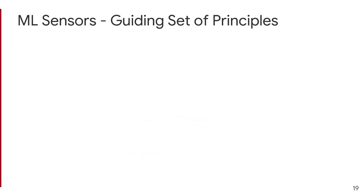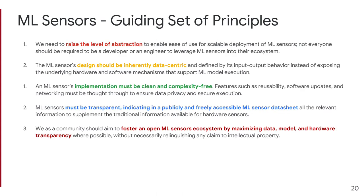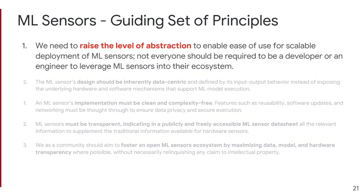When you start building things this way, you have to think about the guiding principles for this concept of an ML sensor for the ecosystem. We have identified five different guiding principles, and the rest of the talk will step through each one, explaining why it's important.